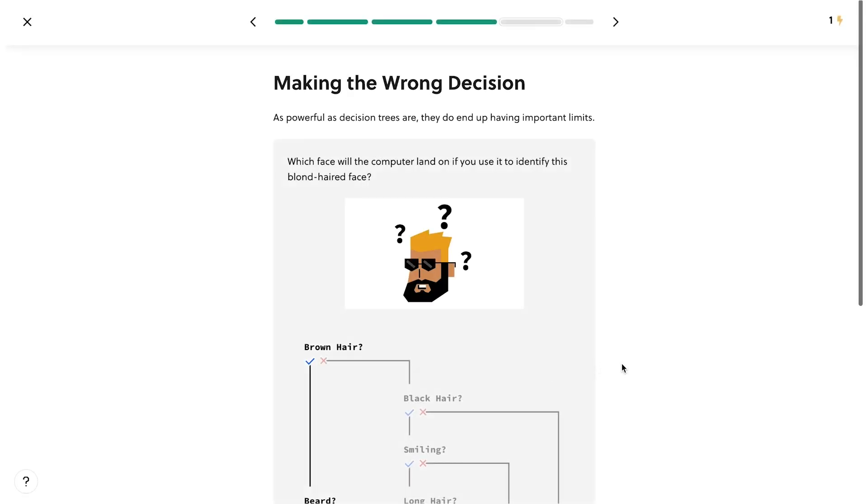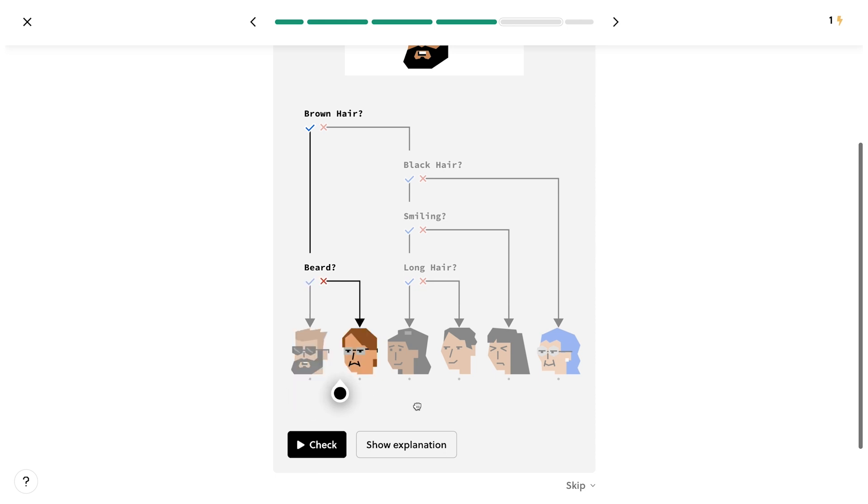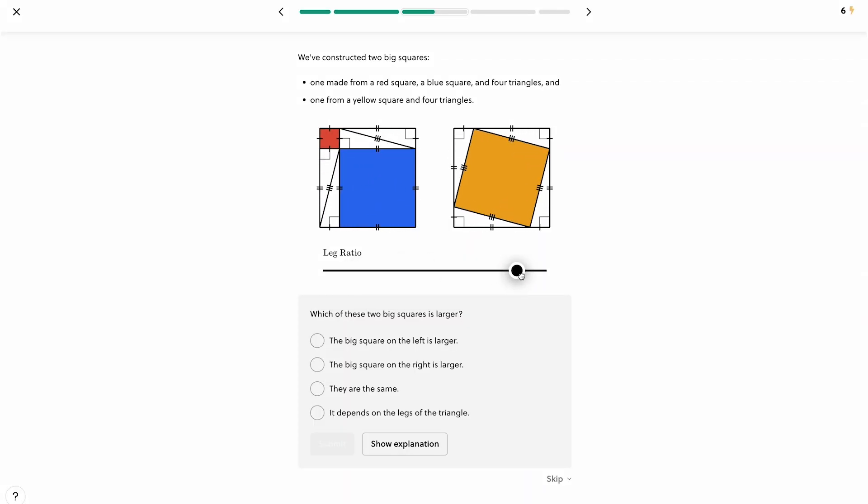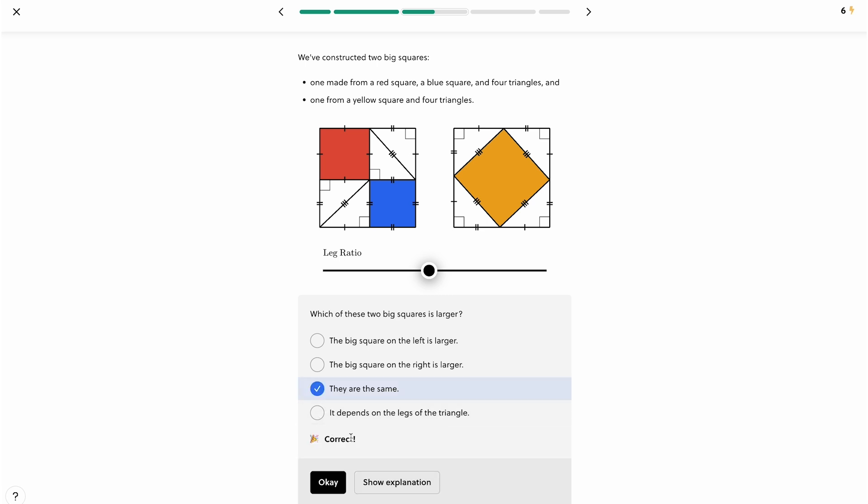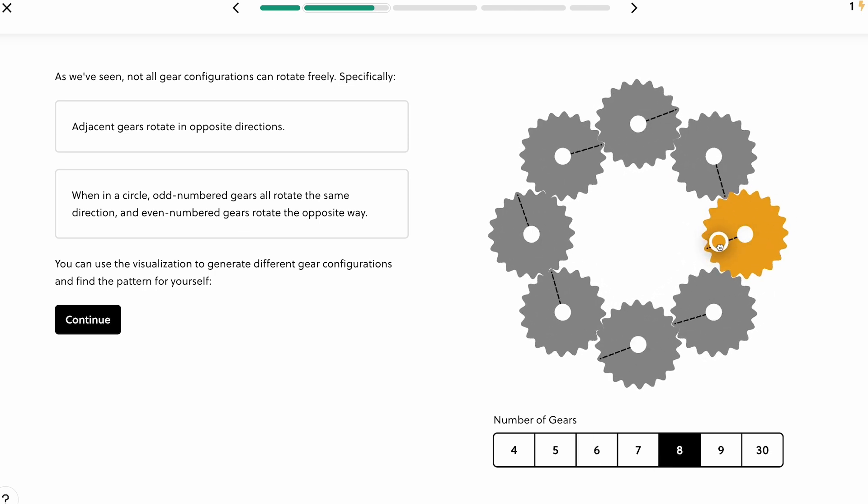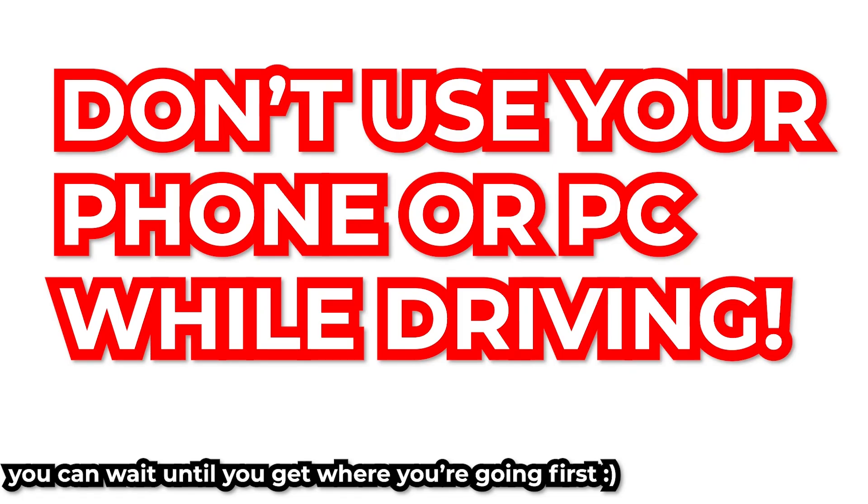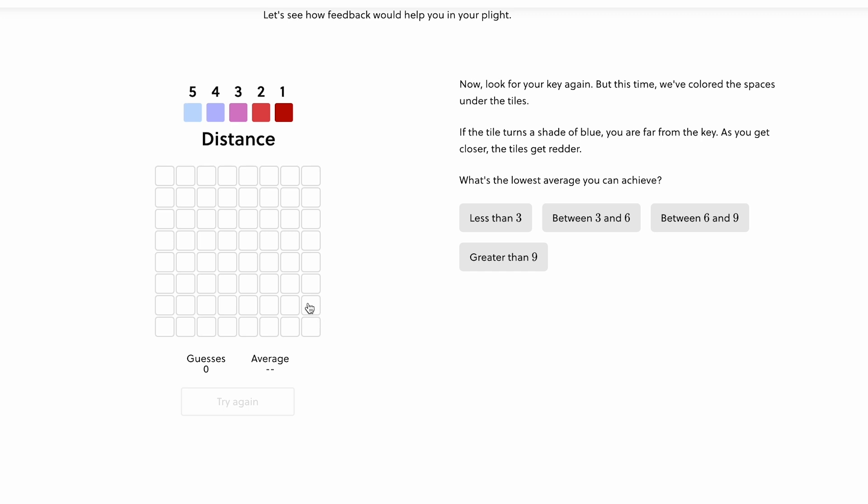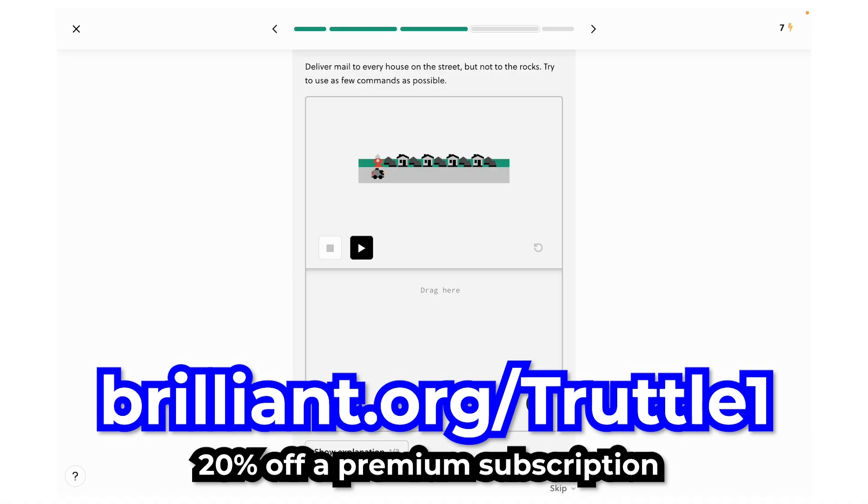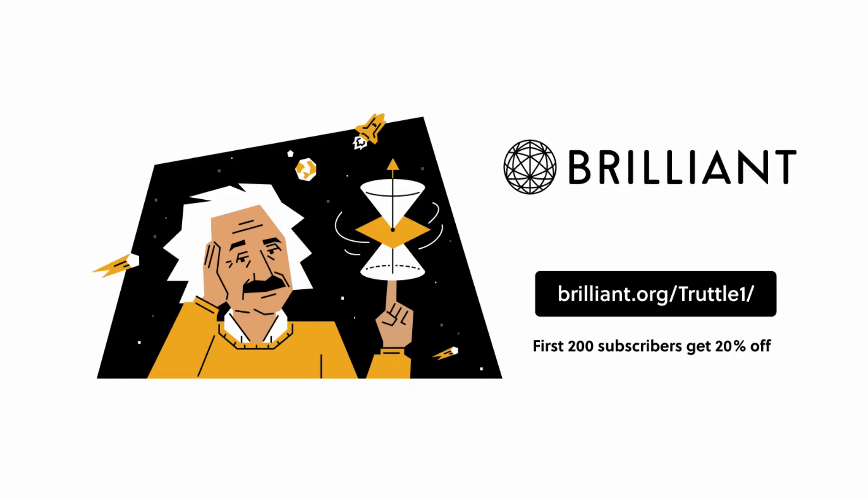This video is sponsored by Brilliant.org. You like learning things, right? I mean, obviously you do since you decided to click on a video about the P versus NP problem. Well, on Brilliant.org, you can learn all sorts of topics ranging from math to scientific thinking to computer science, all in small interactive lessons. Brilliant.org adds new lessons every month, and most of them can be finished in around 15 minutes or less, which is perfect if you have a short break during work or you're on a commute. A commute that you're personally not driving for, by the way. Whether you just want to learn a new subject for fun, or you want to study for a class you have, Brilliant.org can help you achieve your educational goals. And best of all, it's free to start. But if you use my link at Brilliant.org slash TruttleOne, you can get 20% off an annual premium subscription. That's Brilliant.org slash TruttleOne for 20% off the annual subscription. Thank you for checking out Brilliant.org and supporting the channel.